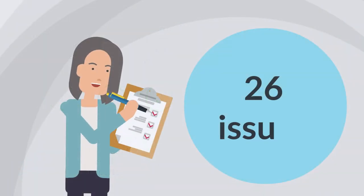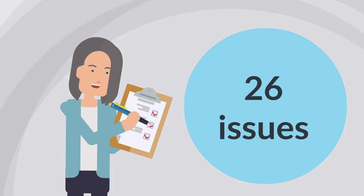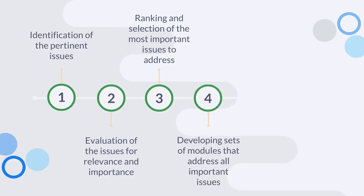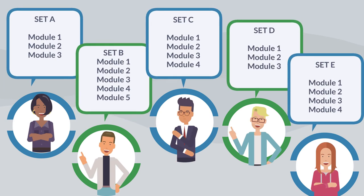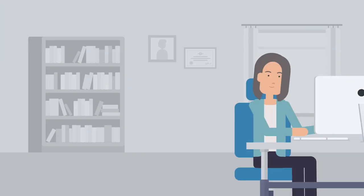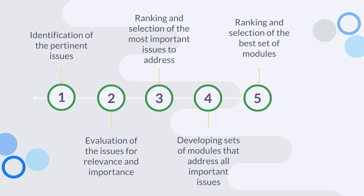Consensus was reached for 26 issues as being both relevant and important for this project. To inform the SMART training program, teams were asked to create three to five modules which covered most, if not all, important issues. Each team submitted a set of modules to the moderator, who created a portfolio document and instructed the participants to rank the module sets. The set with the best ranking was retained.